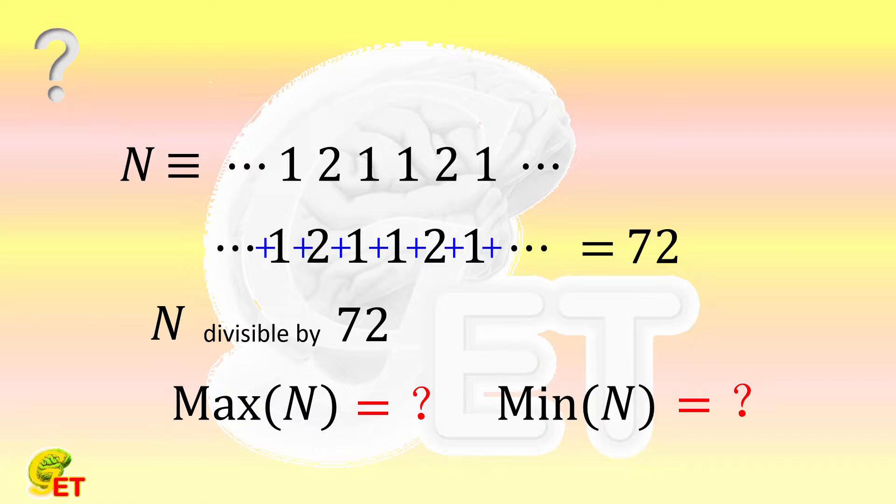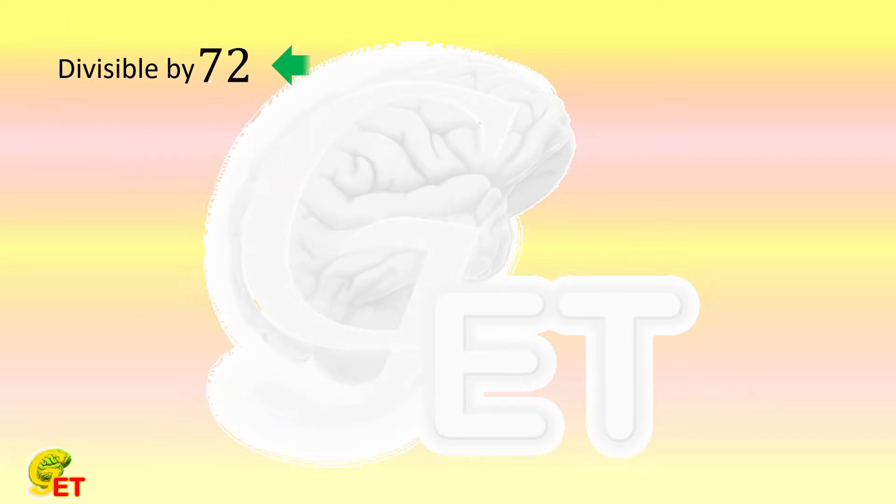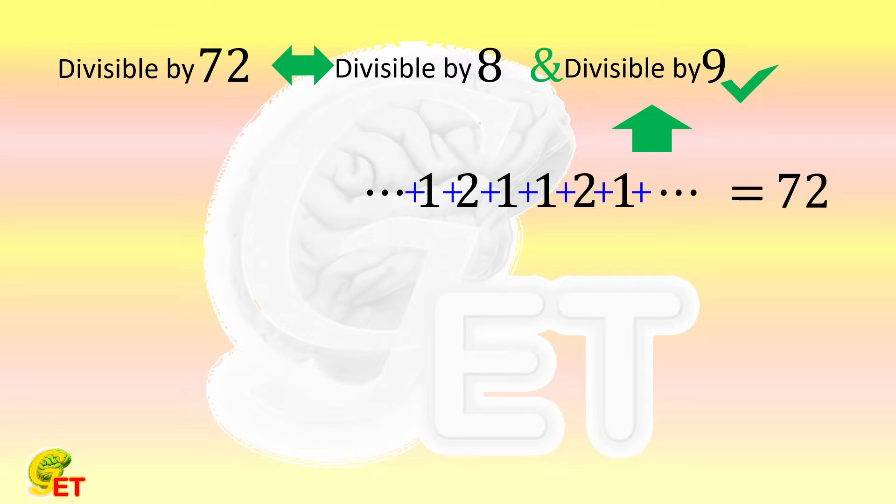As we all know, a number being divisible by 72 means the number being divisible by 8 and 9 at the same time. The digit sum of n is 72, so the number is already divisible by 9. So the only thing we need to do is to make sure it's also divisible by 8.